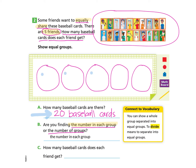I count out all 20 baseball cards, placing them one at a time into each of the 5 friends' circles until I reach 20. I have to stop because that's how many baseball cards I have. Now we can answer Part C: How many baseball cards does each friend get? Each friend received 4 baseball cards. So we can write that in — 4 baseball cards.